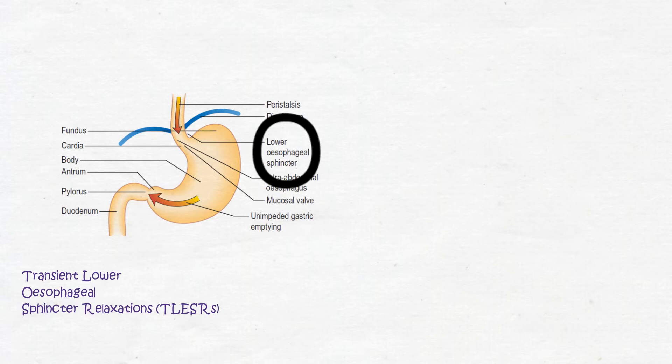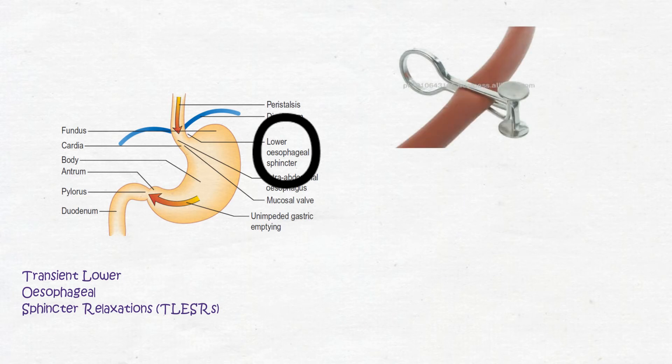Other anti-reflux mechanisms involve the intra-abdominal segment of the esophagus which acts as a flap valve. In addition, the mucosal rosette formed by folds of the gastric mucosa and the contraction of the crural diaphragm at the lower esophageal sphincter acting like a pinch cock, prevent acid reflux.